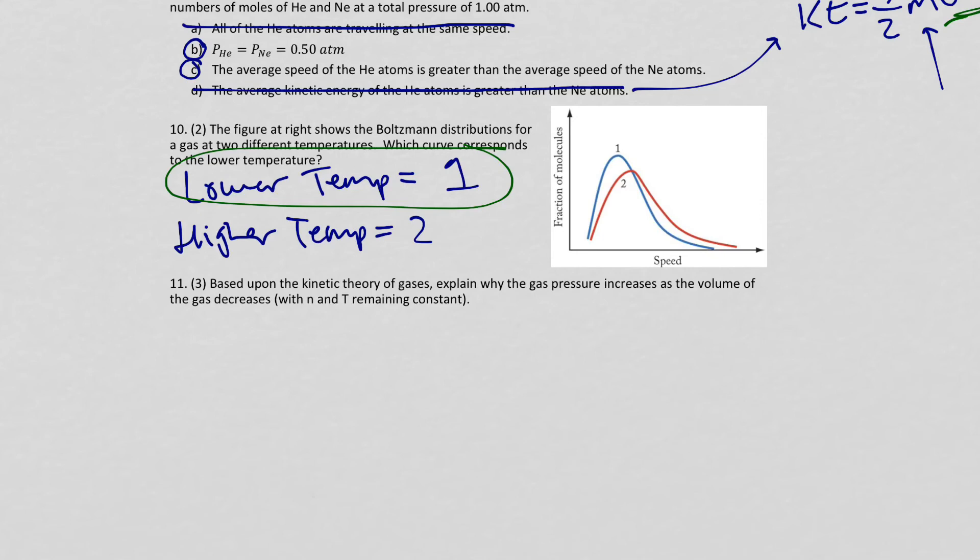Last question. Based on the kinetic energy of the gases, explain why the gas pressure increases as the volume of the gas decreases with number of moles and temperature remaining constant. If we have a smaller volume, and I'm writing with a really sketchy stylus right now, so I'm sorry if it's messy.